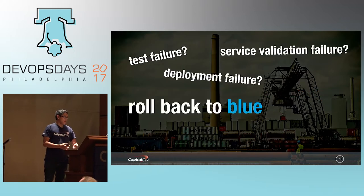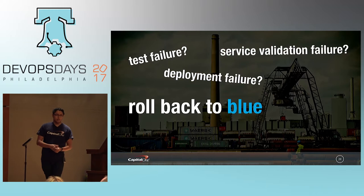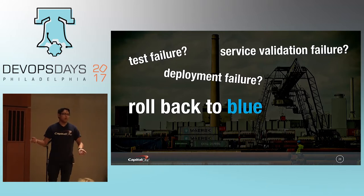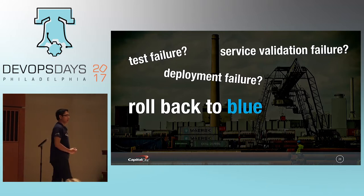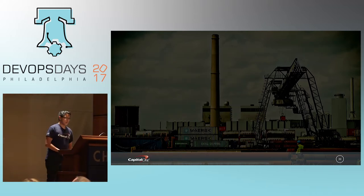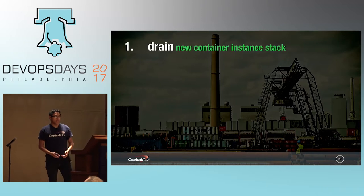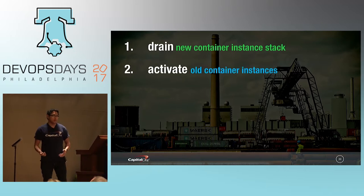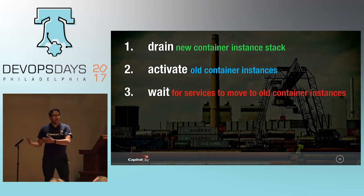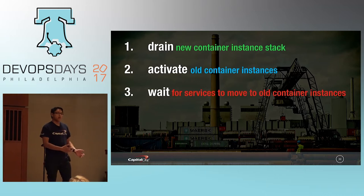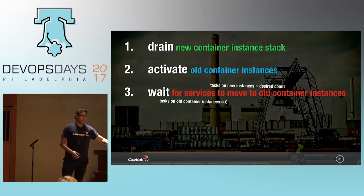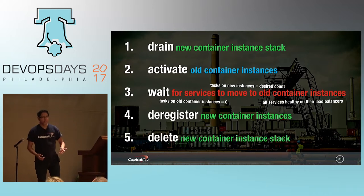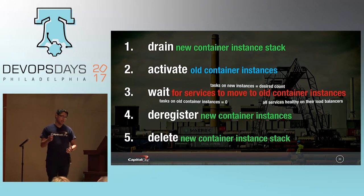If tests fail or services aren't coming up on the new container instances — maybe some had Chef run failures — we roll back to the blue stack. We follow the deployment process in reverse: drain the new container instance stack, activate the old container instances, wait for tasks to move back, then deregister the new container instances and delete the new container instance stack. This process is what allows us to completely decouple the ECS cluster from the applications running on it.